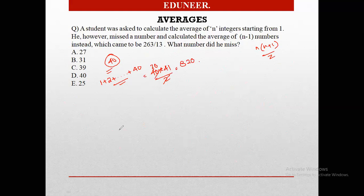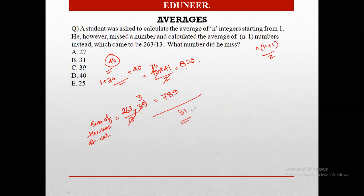Now, what is the sum of numbers calculated by the student? The student got the average as 263 by 13 for 39 numbers, which means that the sum of the numbers that the student calculated is 263 into 3, which is 789. Now if you subtract 820 and 789, I'll get the subtracted value as 31, and this is the number that the student has missed.